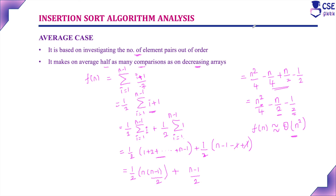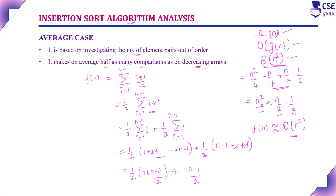So the best case efficiency is Ω(N), the worst case efficiency is O(N²), and the average case efficiency is Θ(N²). This is the time complexity for the insertion sort algorithm — best case, worst case, and average case efficiency. This is all about insertion sort algorithm analysis. In this session we have completed the insertion sort technique. Next, we will move on to the topic graph traversal.